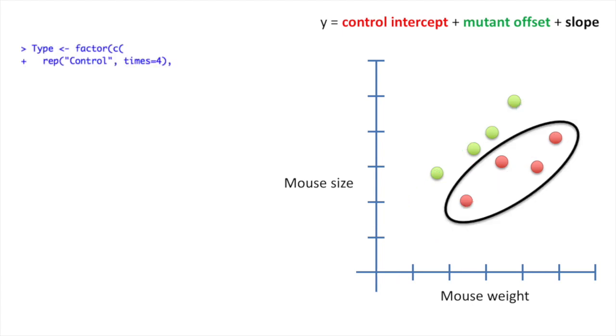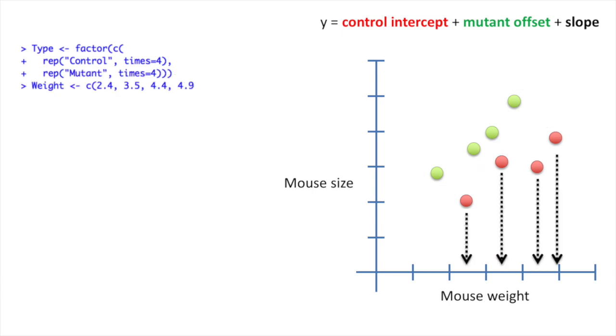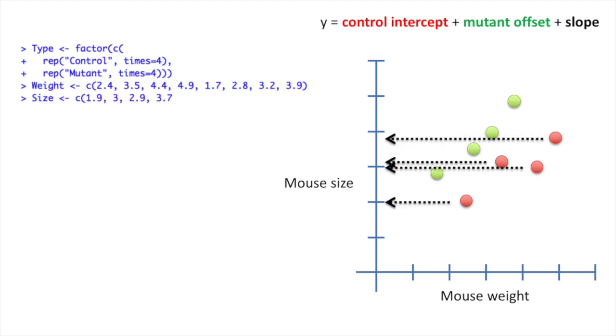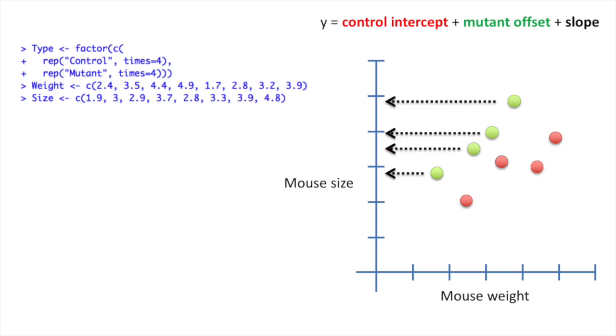The first thing we do is create labels for the control mice, then we create labels for the mutant mice. Now we enter the weights for the control mice, followed by the weights for the mutant mice. Now we add the size measurements for the control mice, followed by the size measurements for the mutant mice.